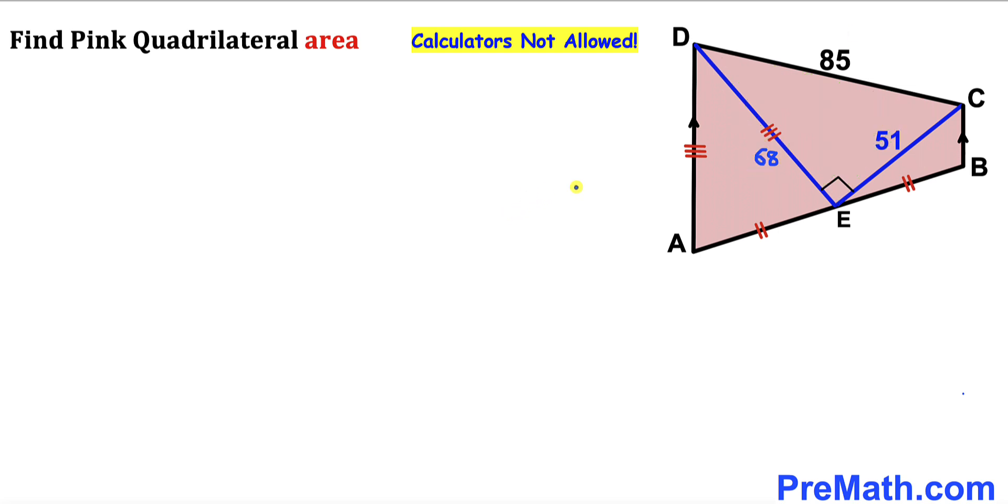Now let's make an observation. We can see the area of this pink quadrilateral ABCD is going to be the sum of these three individual triangle areas: the area of this isosceles triangle ADE and the area of this triangle DEC and finally the area of this triangle CBE.